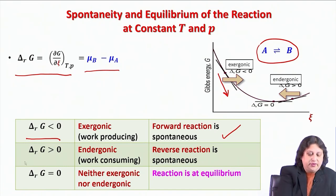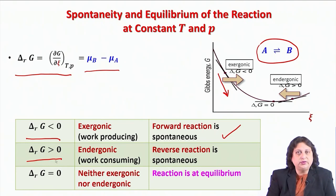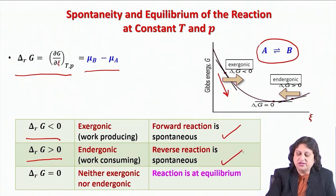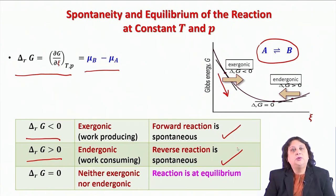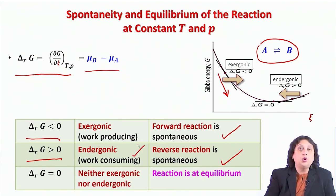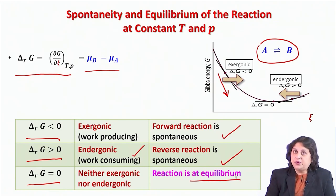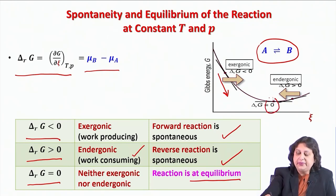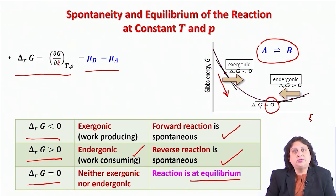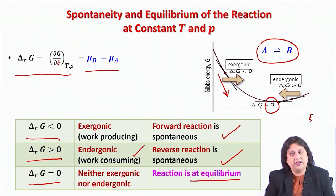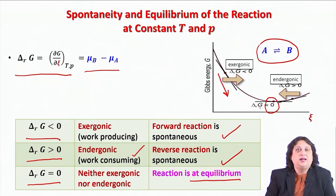If the reaction Gibbs energy ΔRG is negative, the forward reaction is spontaneous — such reactions are called exergonic or work-producing, because the system undergoes a decrease in Gibbs free energy and that decrease can be used to do useful work. If ΔRG is greater than zero, the reverse reaction is spontaneous, and the reaction is endergonic or work-consuming. If ΔRG equals zero, the reaction is at equilibrium — neither exergonic nor endergonic.